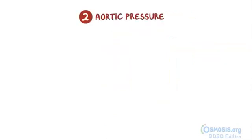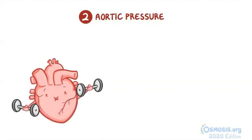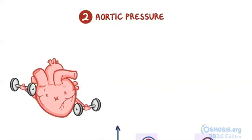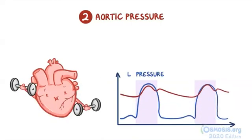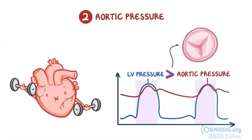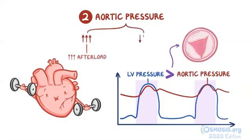Next is aortic pressure. Increased aortic pressure means that the heart must contract harder and generate more pressure within the left ventricle in order to overcome aortic pressure and open the aortic valve. Therefore, increased aortic pressure increases afterload, while decreased aortic pressure reduces afterload.